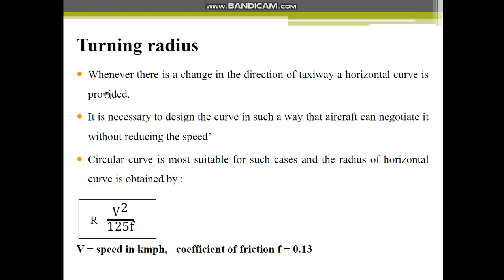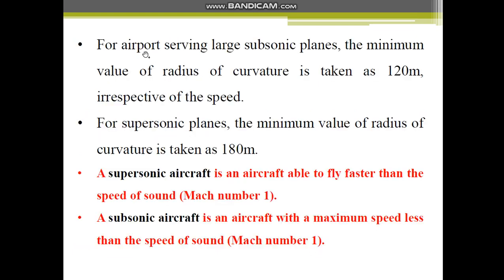Turning radius: whenever there is a change in direction of the taxiway, a horizontal curve is provided. The curve must be designed so that the aircraft can negotiate it without reducing speed. A circular curve is most suitable, and the radius of the horizontal curve is given by: R = V² / (125 × f), where V is the speed of the aircraft in km/h and f is the coefficient of friction, typically taken as 0.13. For airports serving large subsonic planes, the minimum radius of curvature is 120 meters, irrespective of speed.